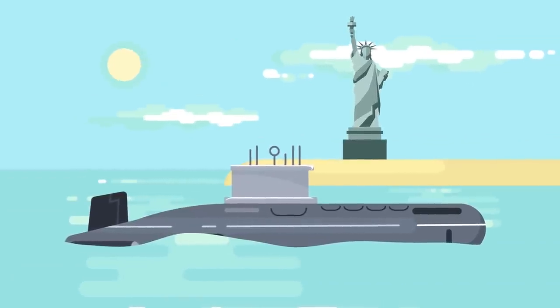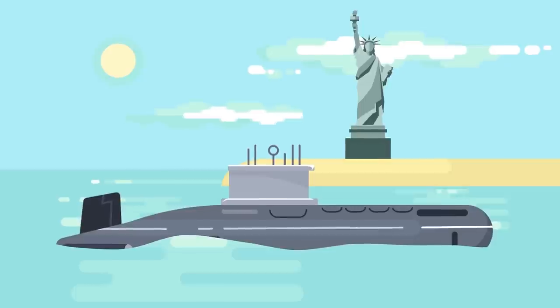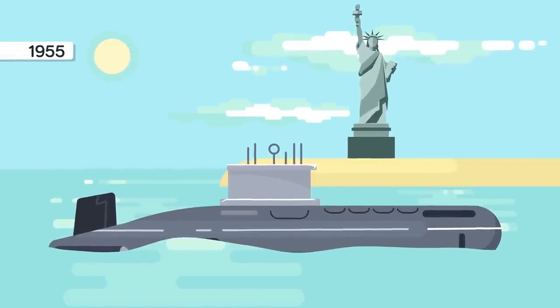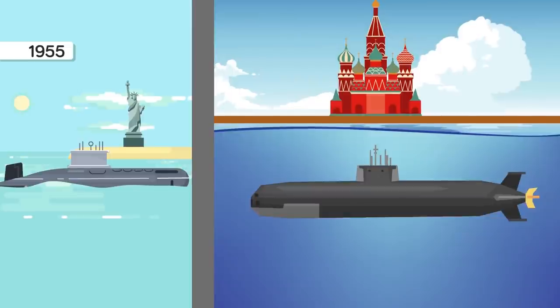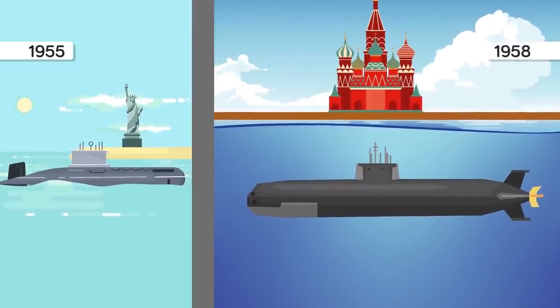11. The first nuclear-powered submarine was the USS Nautilus, deployed in 1955. Three years later, the Soviets followed suit with their Project 627 kit-class submarine.